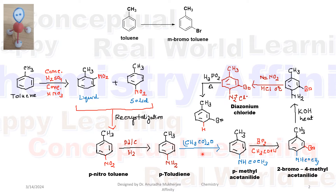When para-toluidine is treated with acetic anhydride, N-acetylation takes place and we get the anilide (acetamide-protected amine).